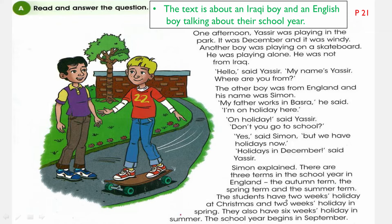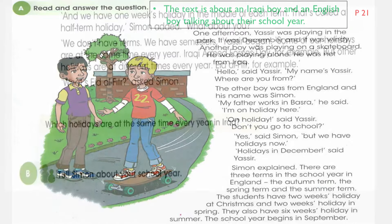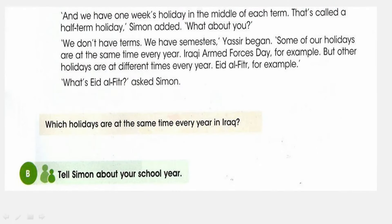They also have six weeks holiday in summer — six weeks of summer holiday. The school year begins in September. And they have one week's holiday in the middle of each term — that's called a half term holiday. Simon added, 'What about you?'